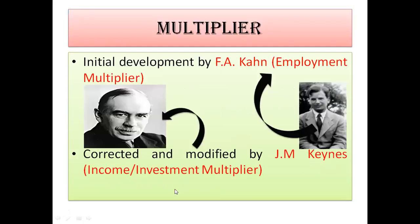The scientist behind the multiplier concept — the initial development — is FA Khan, who gave the employment multiplier. Afterwards it was corrected and modified by JM Keynes, who gave the income multiplier and investment multiplier.